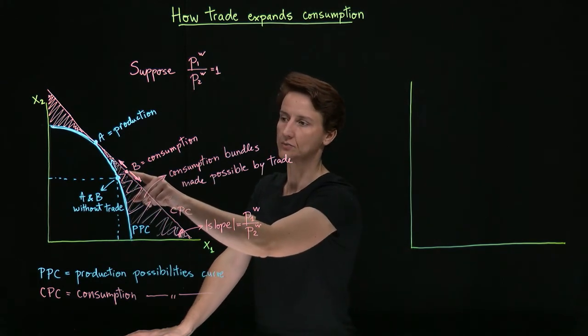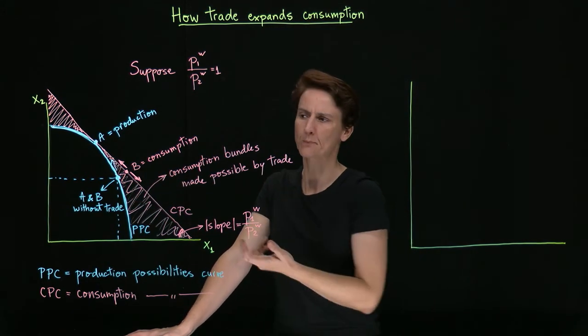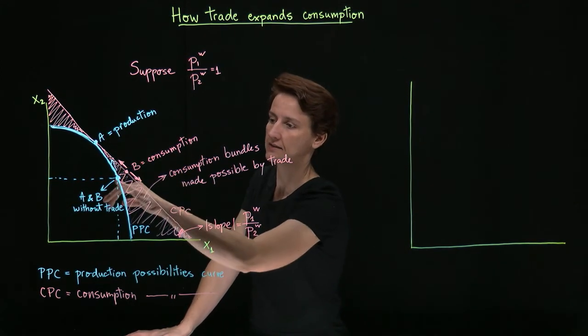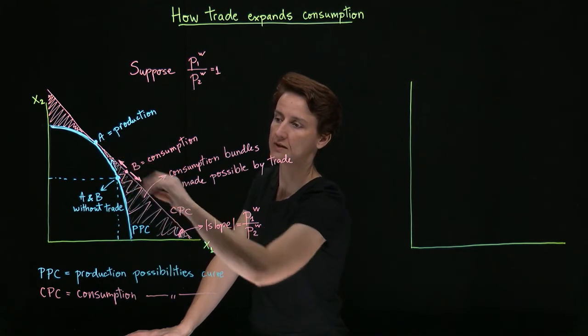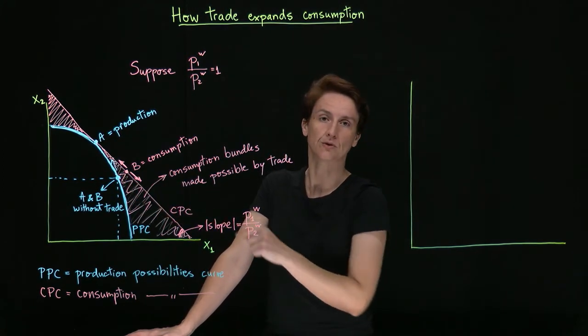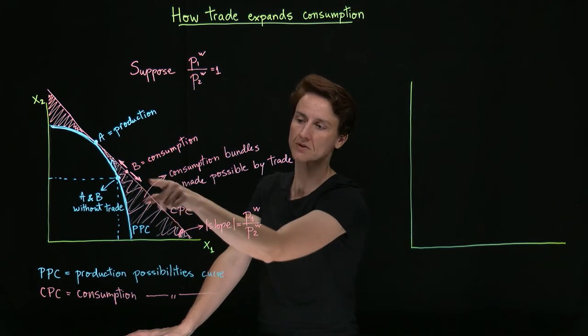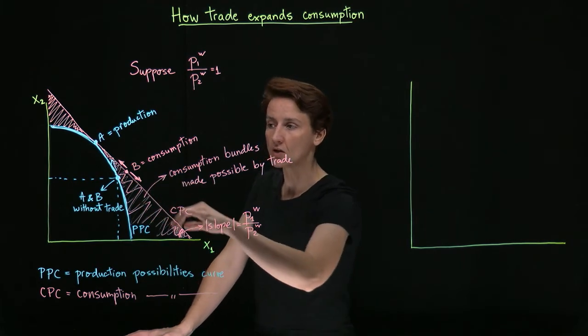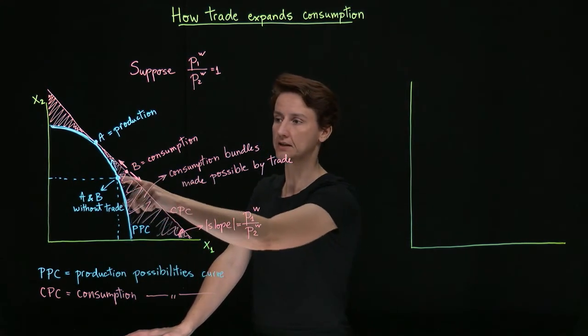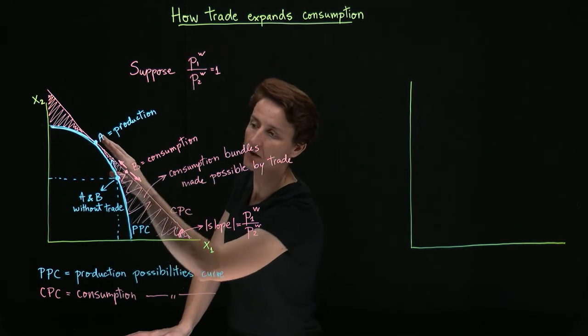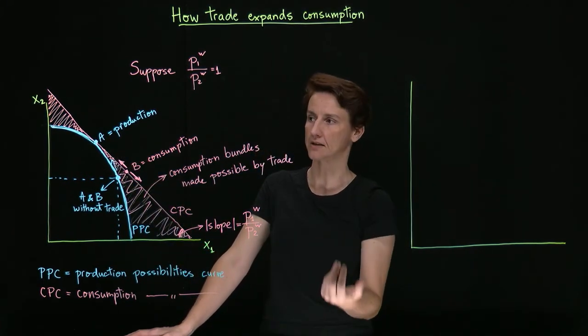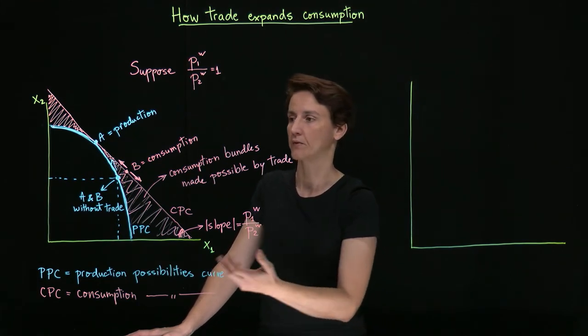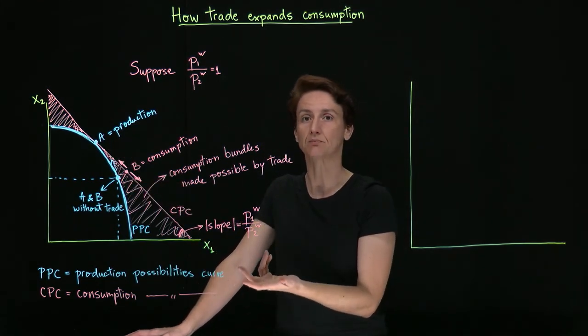So they might consume here at this point B as I've marked it here. But that's not something that we can know for sure. Perhaps now that compared to before, good one is relatively cheaper. Perhaps they'll consume a lot more of good one. And so point B might be somewhere around here. Wherever that choice is, we know that they have to be better off than initially simply because now the set of options has expanded. There is nothing that was a possibility before that is no longer a possibility now. There are more options. It must be that the country is better off.